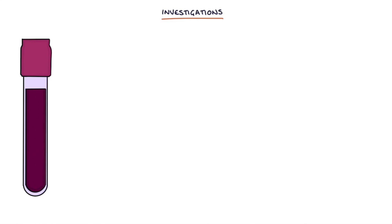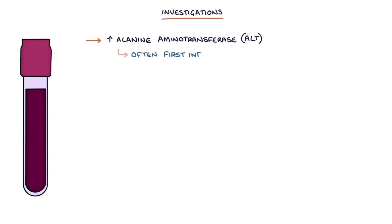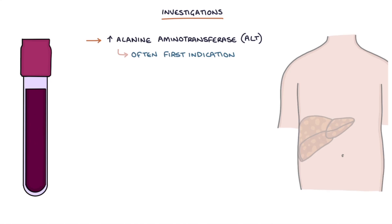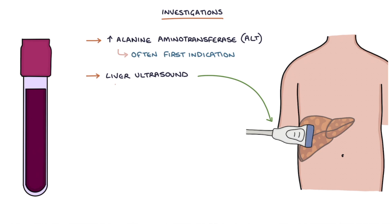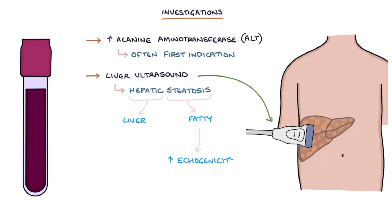A raised alanine aminotransferase, or ALT, on the liver function blood tests is often the first indication that a patient has non-alcoholic fatty liver disease. A liver ultrasound scan can be used to confirm the diagnosis of hepatic steatosis, or a fatty liver, and this is seen as increased echogenicity.